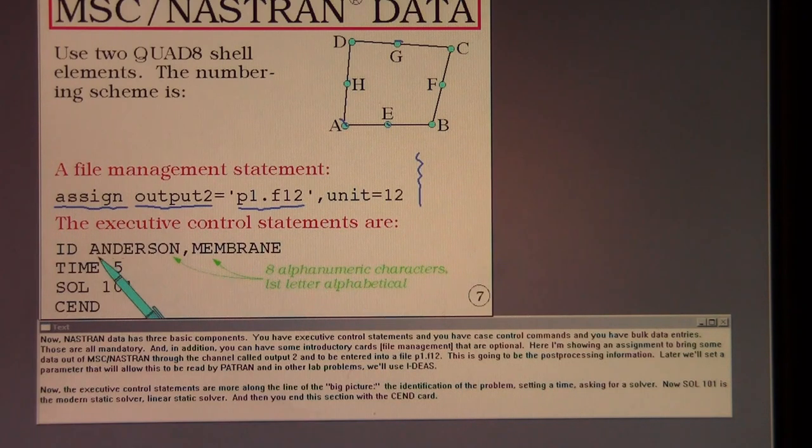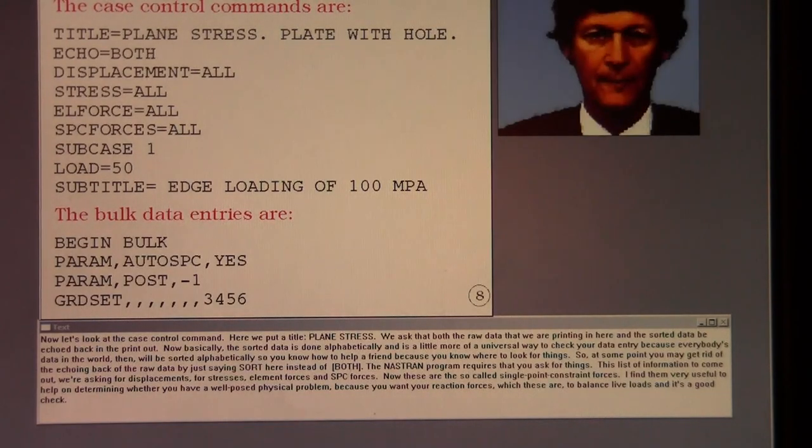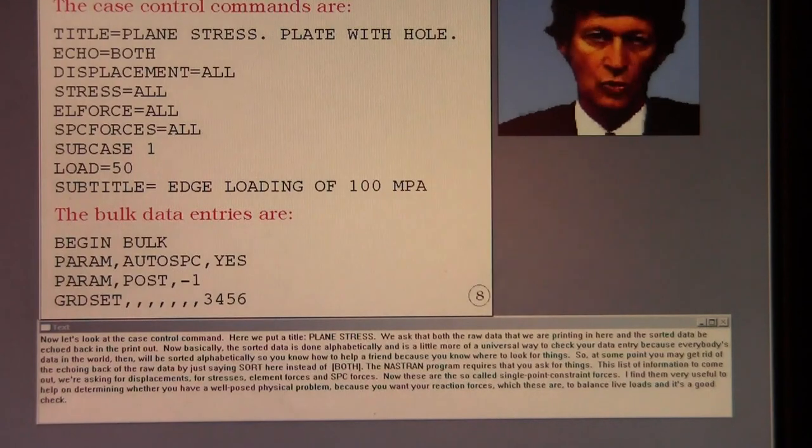Now the executive control statements are more along the line of the big picture. The identification of the problem, setting a time, asking for a solver. Now SOL 101 is the modern static solver, the linear static solver. And then you end this section with the C end card.